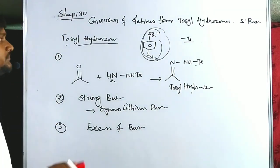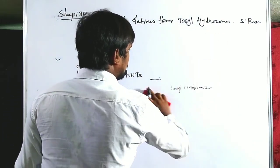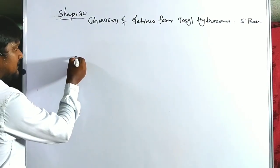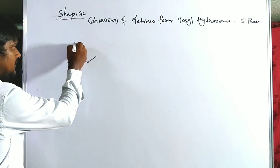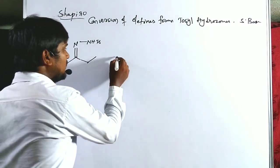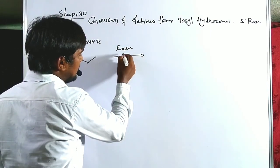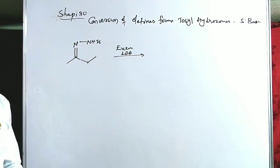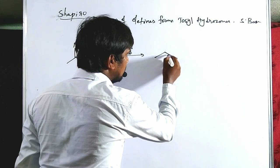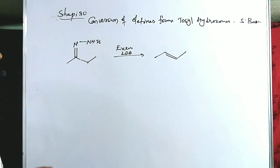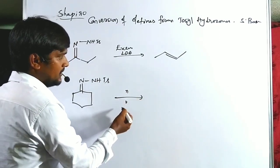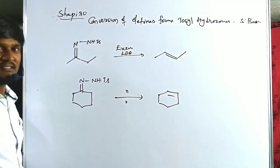Now let's look at the reaction. The tosyl hydrazone in presence of excess lithium bases, like LDA, n-butyllithium, or t-butyllithium, converts to olefins. Sometimes we take cyclic tosyl hydrazones; here also it converts to the olefins.